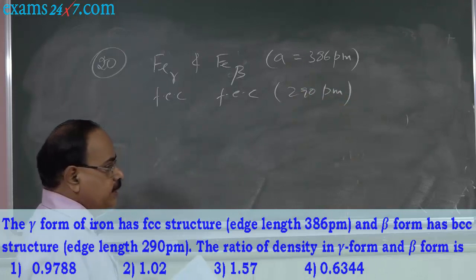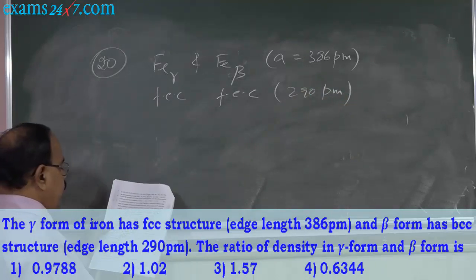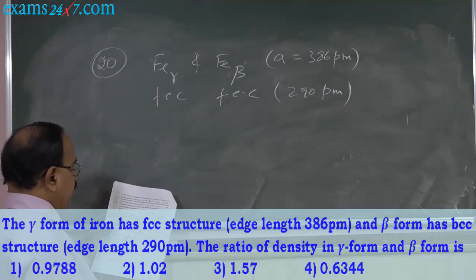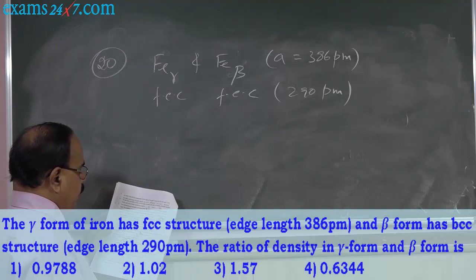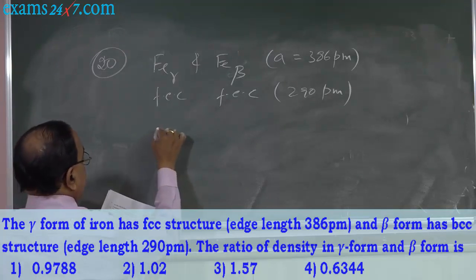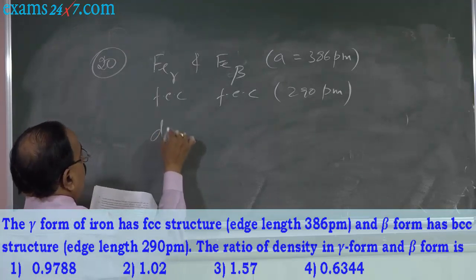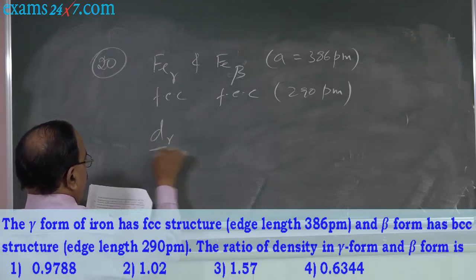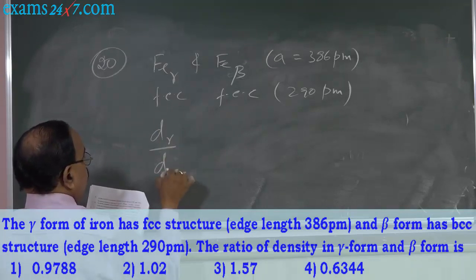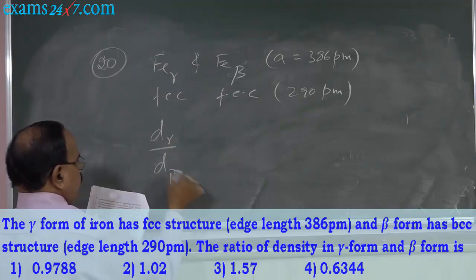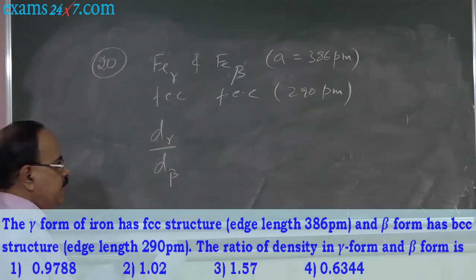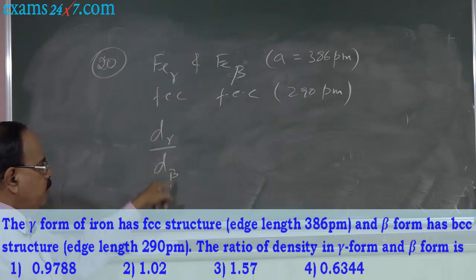What is asked? What is the ratio of density in gamma form and beta form? That means the density of gamma form to beta form — the ratio of density of gamma form to beta form is asked.